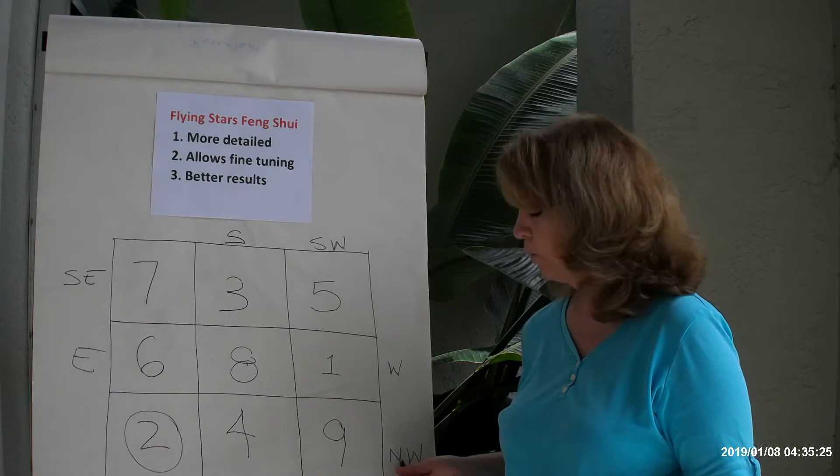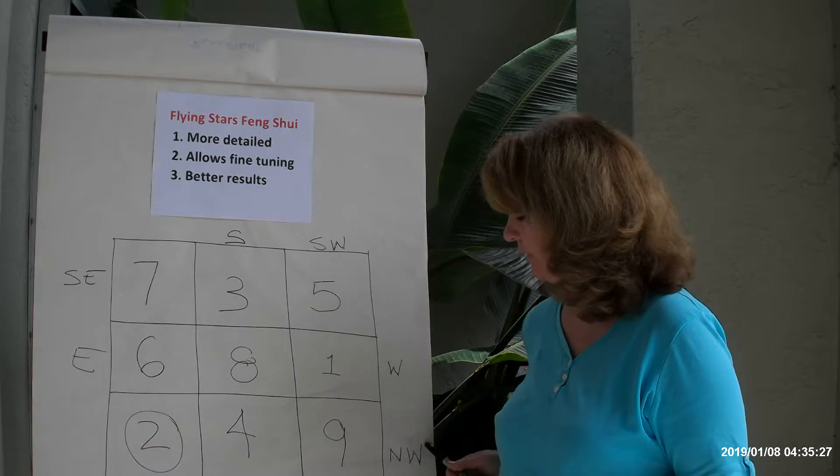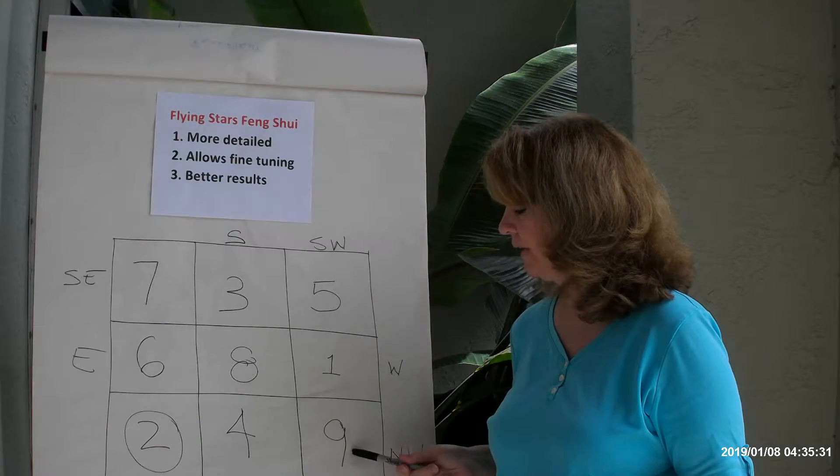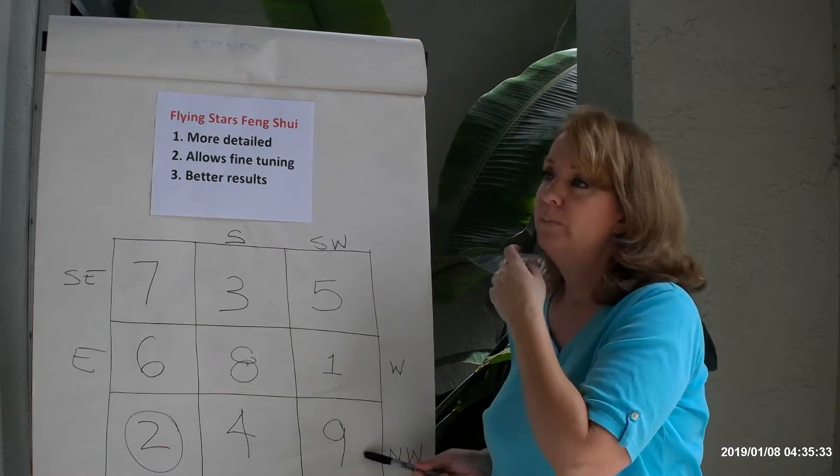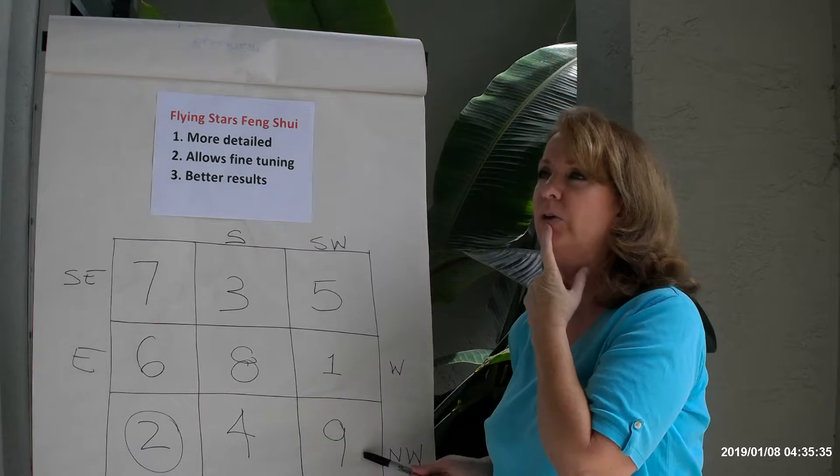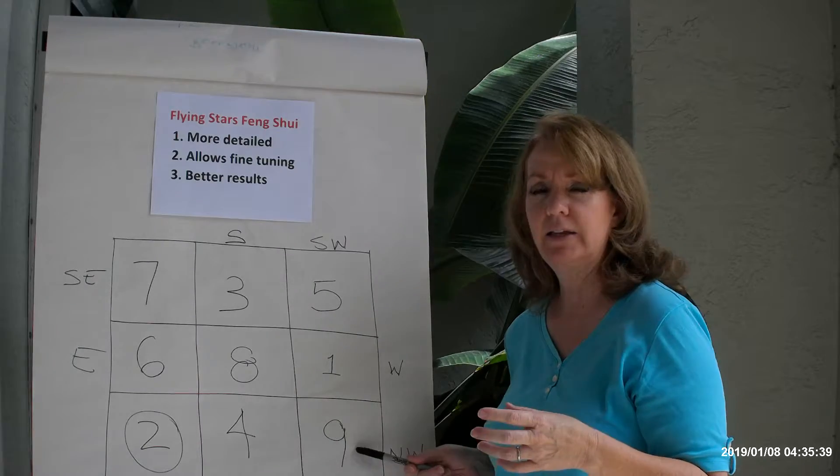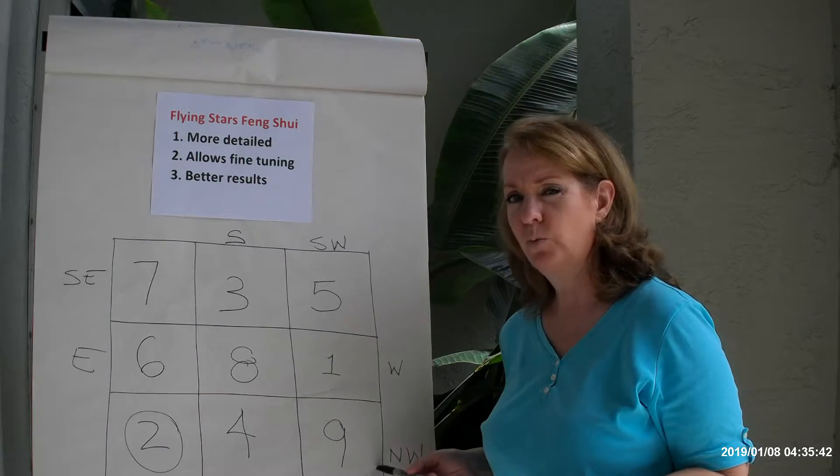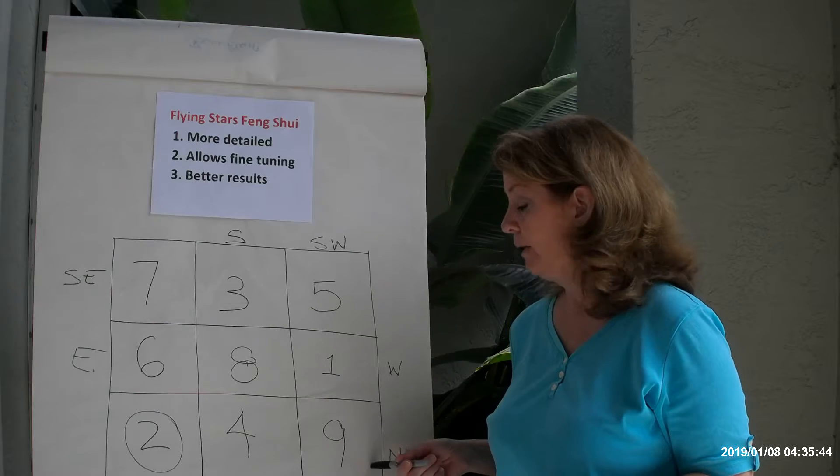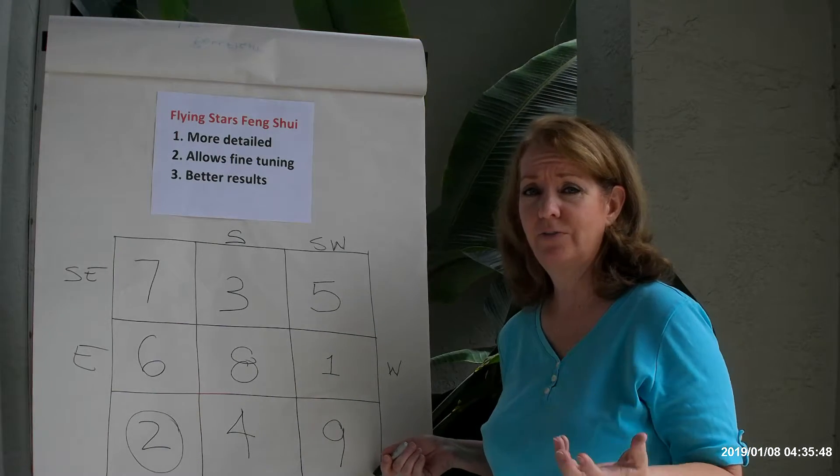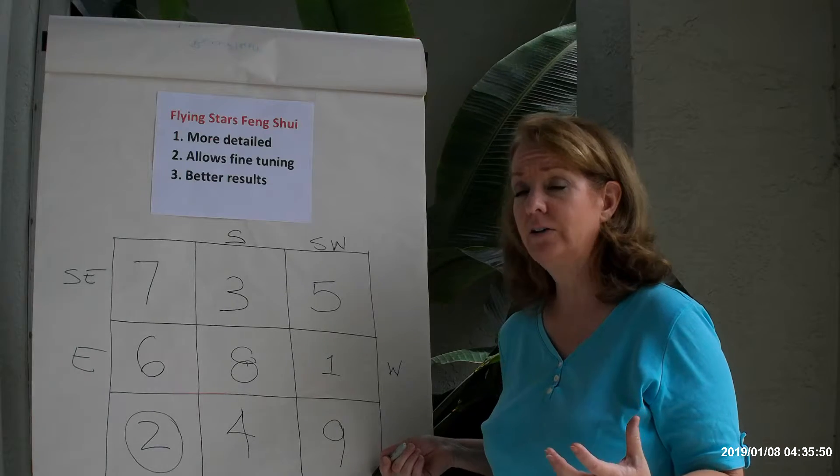The number 9 star is molding the energy of the Northwest. You can activate this star by using actual fire, like candles, red candles, and light them. Unlit candles I have not found to work particularly well. Some people use televisions in the Northwest.